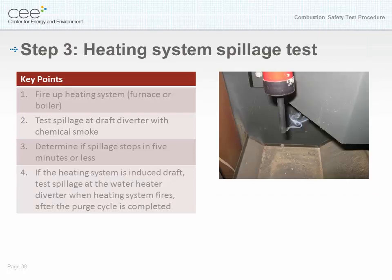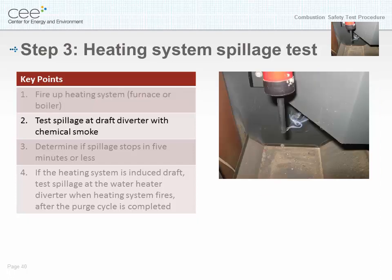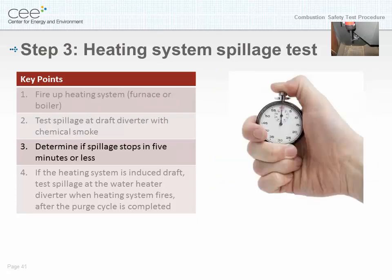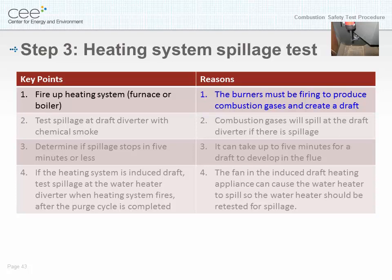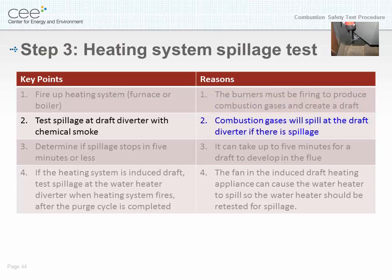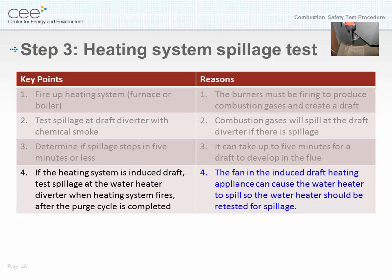Step three: heating system spillage test. Key points: number one, fire up the heating system — the furnace or the boiler; number two, test for spillage at the draft diverter with chemical smoke; number three, determine if spillage stops in five minutes or less; number four, if the heating system is induced draft, test spillage at the water heater diverter when the heating system fires, after the purge cycle is completed. Reasoning: burners must be firing to produce combustion gases and create a draft; combustion gases will spill at the draft diverter if there is spillage; it can take up to five minutes for a draft to develop; and the fan in the induced draft heating appliance can cause the water heater to spill, so the water heater should be retested for spillage.